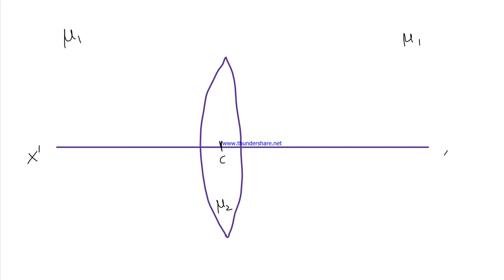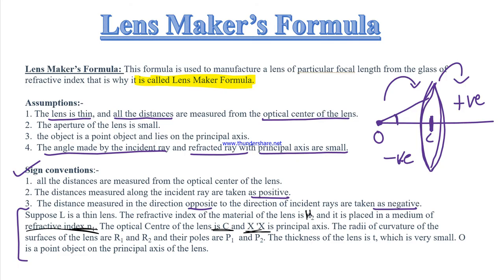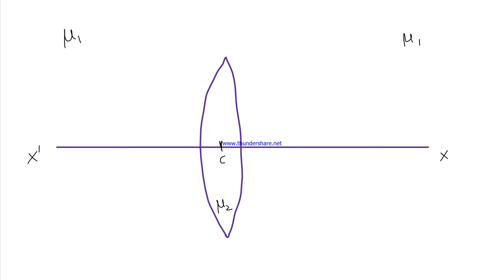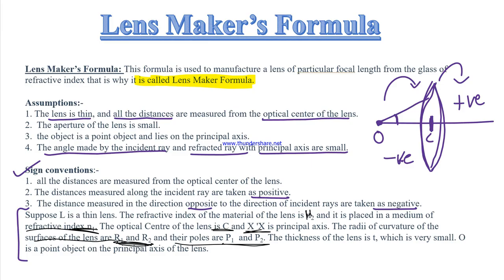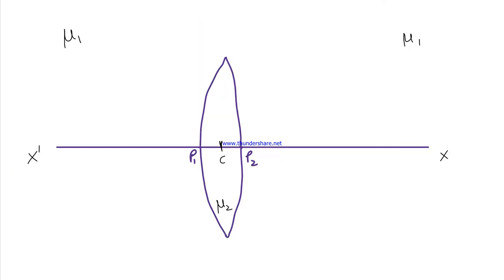The radii of curvature of the surfaces of the lens are R1 and R2. Their poles are P1 and P2. The thickness of the lens is small t, which is very small — confirming the lens is thin. O is a point object on the principal axis. So let's start: first we have placed point object O.